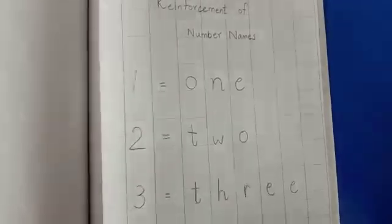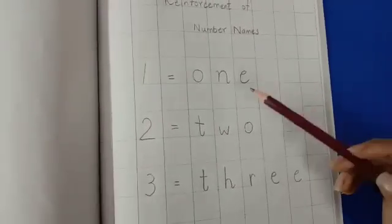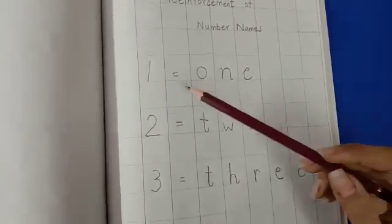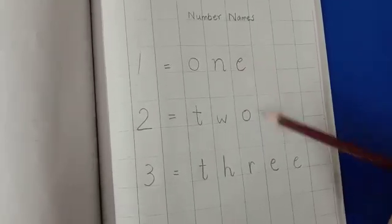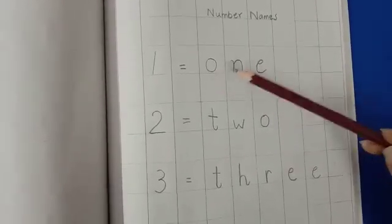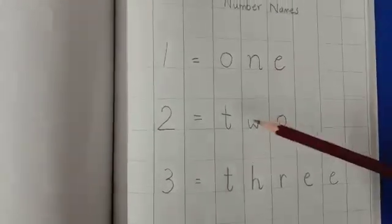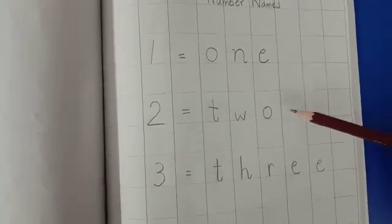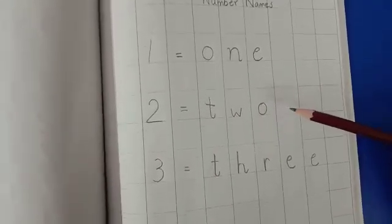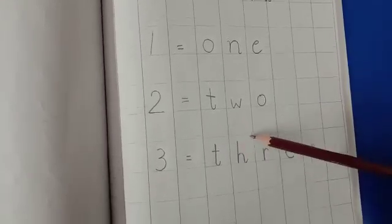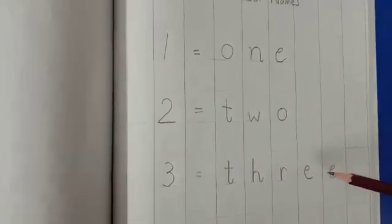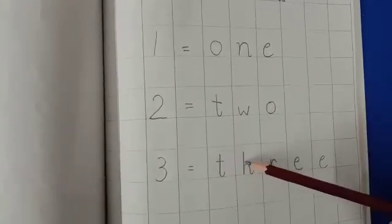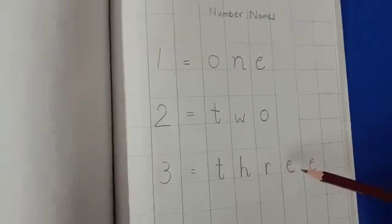After writing this you will revise the spellings. Repeat with me. O-N-E-1, T-W-O-2, T-H-R-double-E-3.